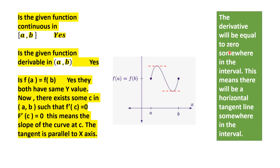The derivative will be equal to 0 somewhere in the interval, meaning there will be a horizontal tangent line somewhere in the interval. This is what the value of c is. The value of c has to lie between a and b, and it has to be a point where the tangent is a horizontal straight line parallel to the x-axis.